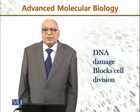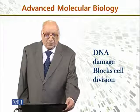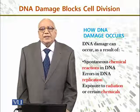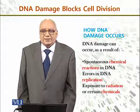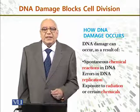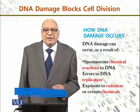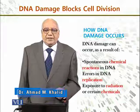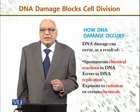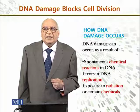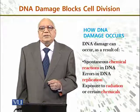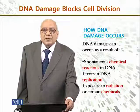In this module, we will discuss how the cell cycle can be blocked. The cell cycle is blocked by DNA damage. DNA damage can occur as a result of: number one, spontaneous chemical reactions in DNA, since DNA is a macromolecule and a chemical; second, errors in DNA replication — while replicating, some errors occur; and third, exposure to radiation or certain chemicals, which are also responsible for DNA damage.